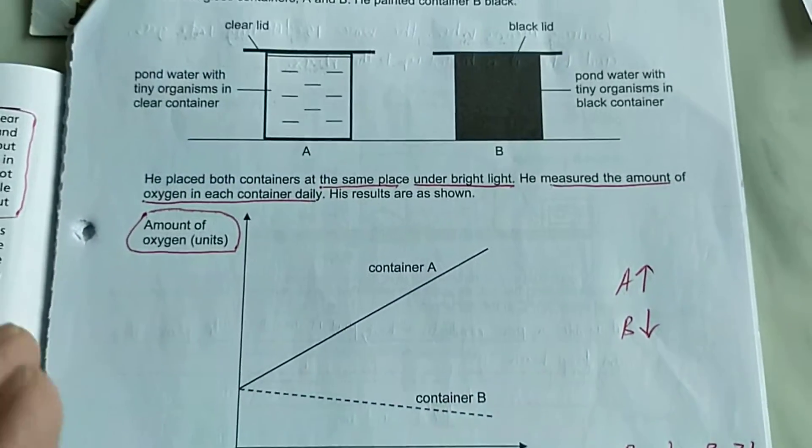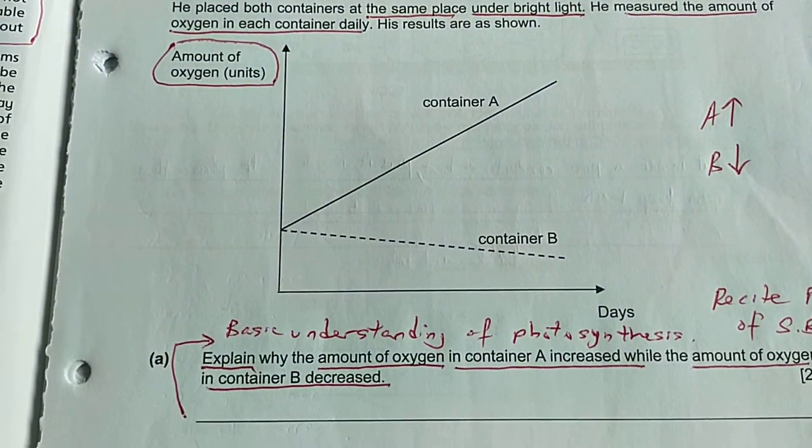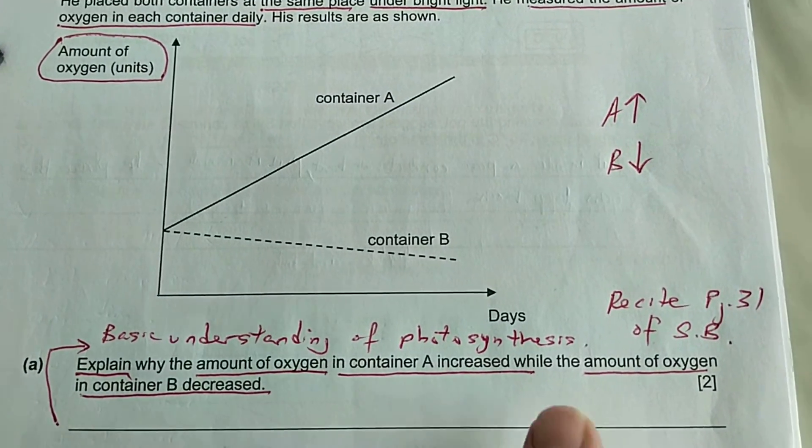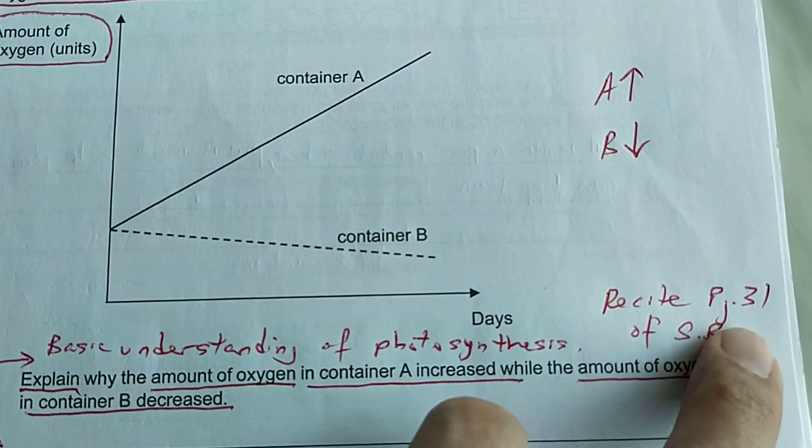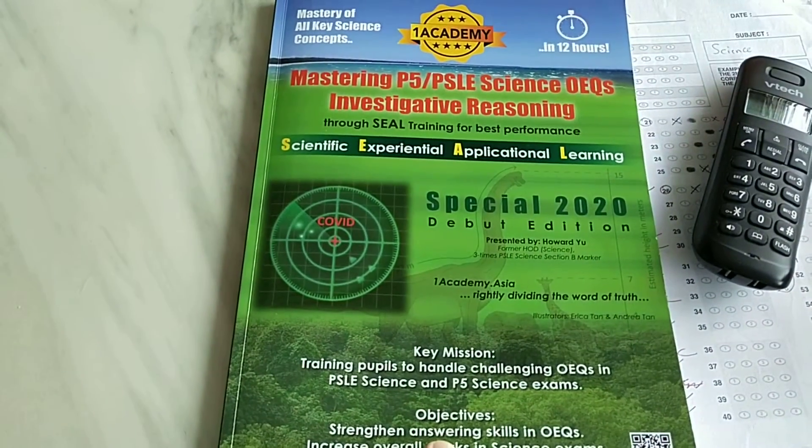When they read these questions, immediately they must be able to recall this concept. This question tests the basic understanding of photosynthesis. That's why I put by the side recite page 31 of SB. SB is actually my Science Bible which I published, in this book which I call the Science Bible.